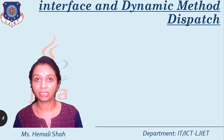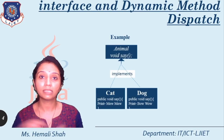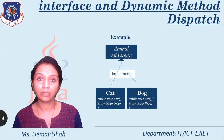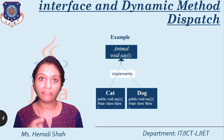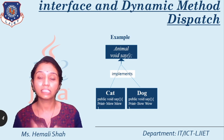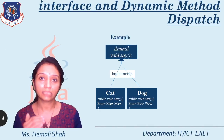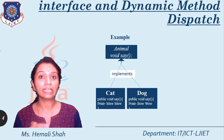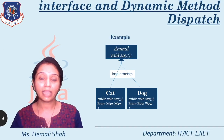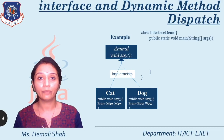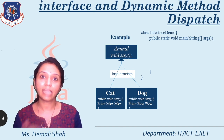Now let's talk about the dynamic method dispatch concept, which we have already done with the abstract class concept. Whenever you need the dynamic method dispatch concept, you must have hierarchical inheritance. This is the example I already explained. Whenever you make the reference variable of the animal interface and assign the object of cat class, then assign the object of dog class to this reference variable of animal and call the say function, you will get different output. You have to create a demo class with public static void main to demonstrate the dynamic method dispatch concept.